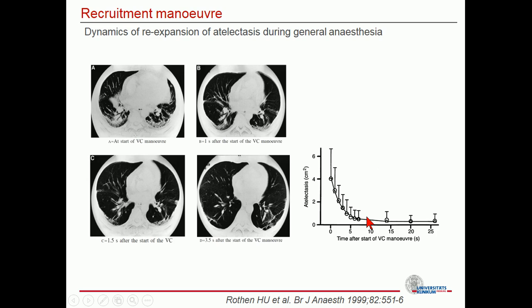How dynamically should such a recruitment manoeuvre be imagined, and how long should it be carried out? In work by Mr. Heddenstene, a one-stage sustained inflation manoeuvre with a peak pressure of 40 cmH2O was performed on 12 patients with healthy lungs. CT images are displayed in a short time sequence: starting with clear atelectasis in the upper left, then after one second, 1.5 seconds, and after 3.5 seconds — no atelectasis can be detected macroscopically. This means that after approximately five seconds, the recruitment manoeuvre may already be successful, which is important because hemodynamic influence, if any, would typically begin only around that time.